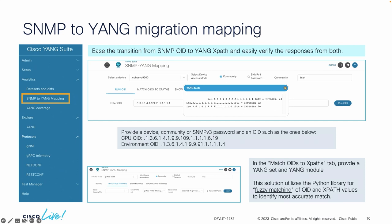We're continuing these tests today, which is why I don't have finalized numbers yet — but we're testing this both with single devices and with stacks as well. Yang Suite can be used if you're interested in making this migration from SNMP to Yang. You're able to see the relationship between SNMP OIDs and Yang XPaths, to help understand which features you can use to get the same types of data.